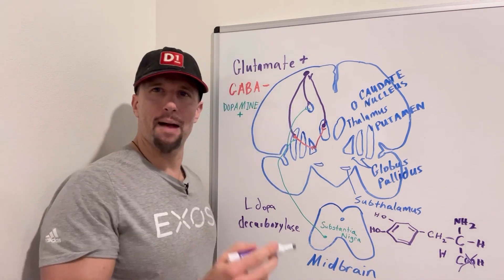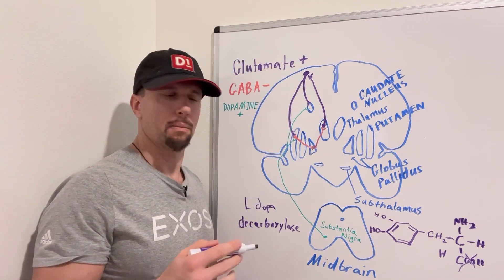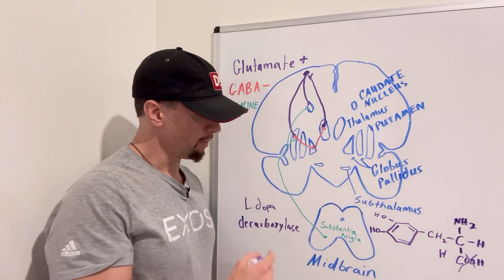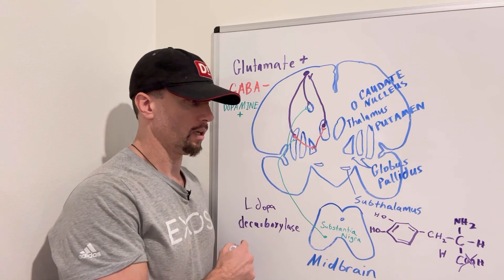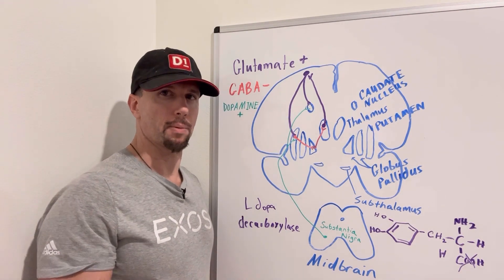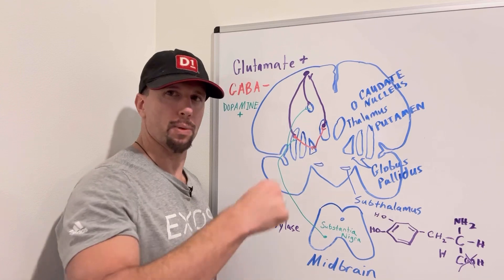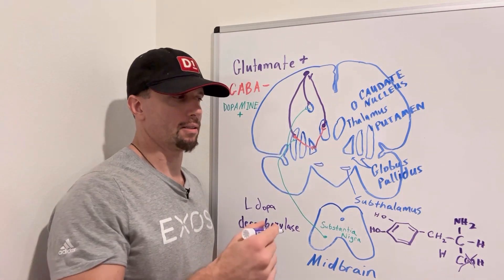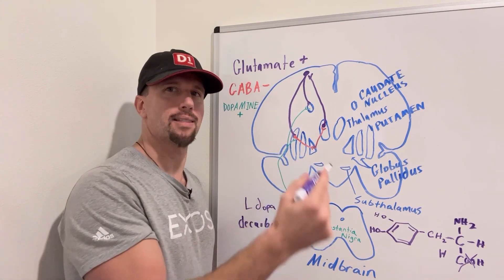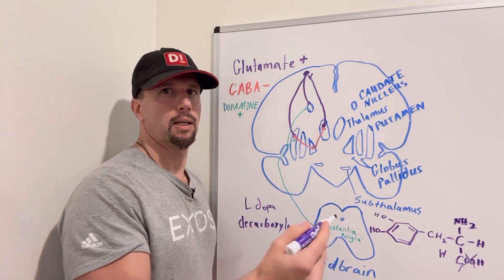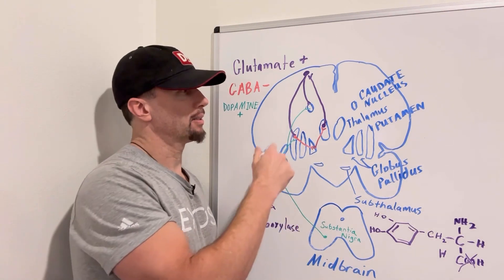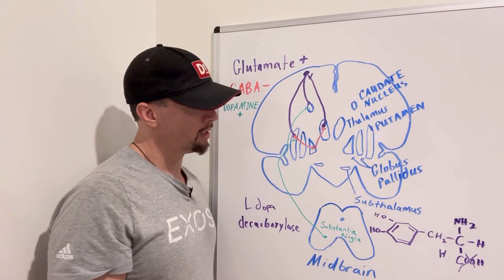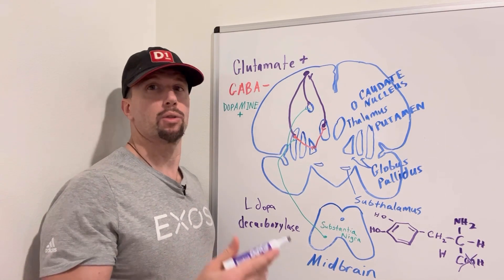You don't want that conversion happening in the peripheral system, because then dopamine can't cross the blood-brain barrier. But if you block L-DOPA decarboxylase peripherally with carbidopa, the L-DOPA can cross the blood-brain barrier, get into the brain, and then neurons can take it that last step from L-DOPA to dopamine. This can mask the problem for a while, though it does diminish over time as this is a progressive neurological disorder.